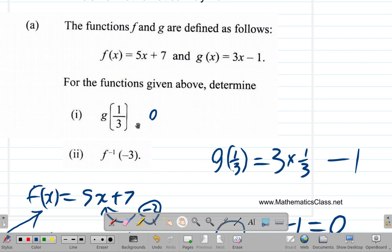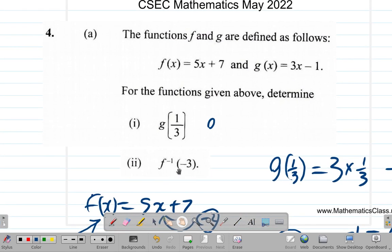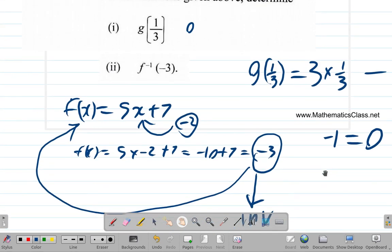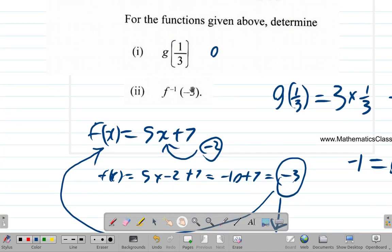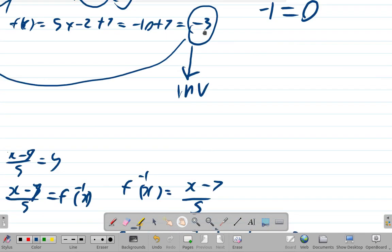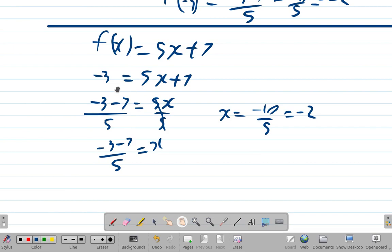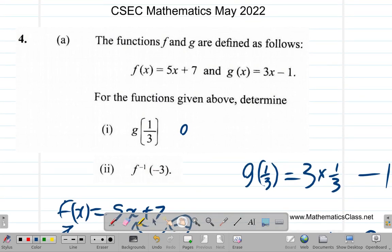Before I erase the work from Question 4A, let's just recap it. You want g of 1/3, you put 1/3 there and work it out and got 0. For f inverse of -3, we could find f inverse of x first, then put -3 into it, and we get -2.